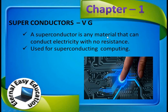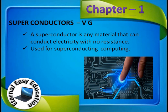A superconductor is any material that can conduct electricity with no resistance. For example, a copper wire can allow current to pass through it because it is able to transmit electrons. Superconductors take this further — they conduct electricity with zero resistance.